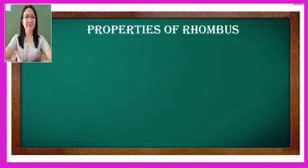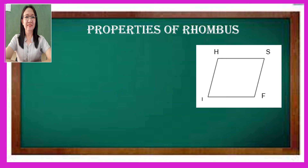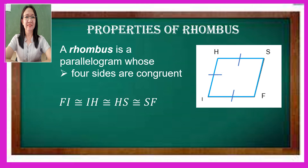Now let us see the properties of rhombus. Let us look at our rhombus F-I-H-S. A rhombus is a kind of parallelogram whose four sides are congruent. So side FI is congruent to side IH, and is congruent to side HS, and also congruent to side SF.